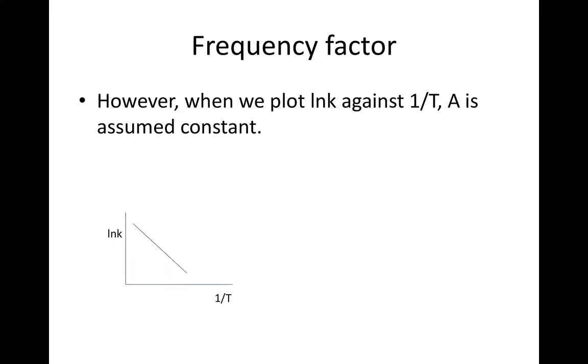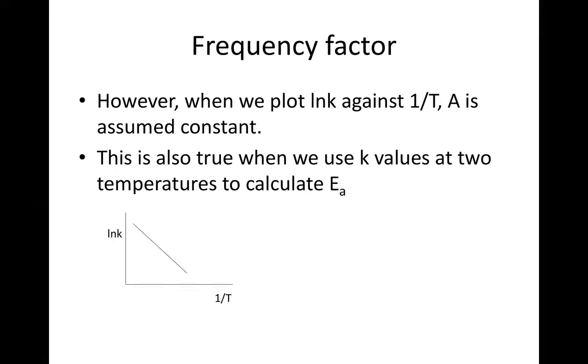However, when we plot natural log of K against 1 over T, A is assumed constant as mentioned earlier. This is also true when we use K values at two different temperatures to calculate Ea again, as we mentioned earlier.